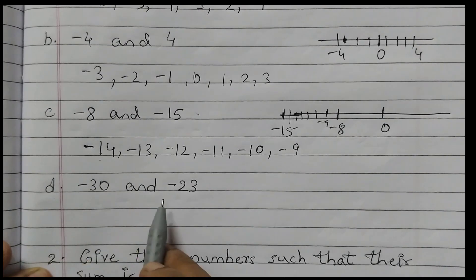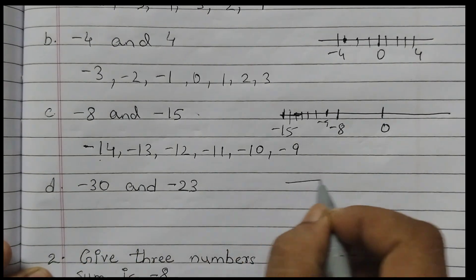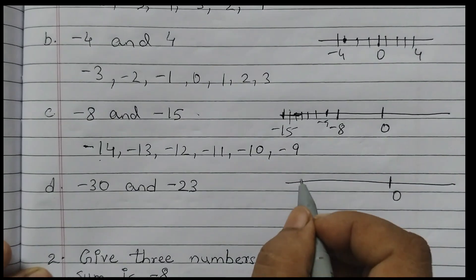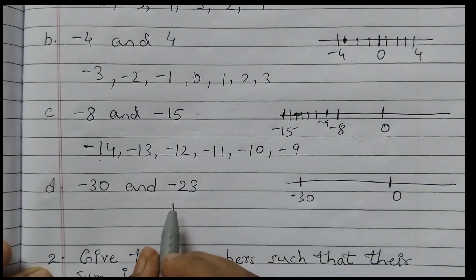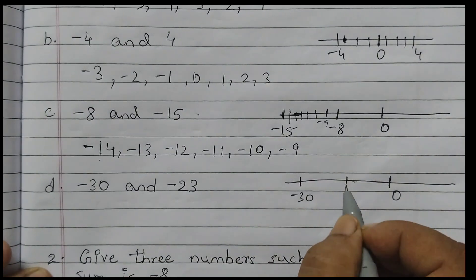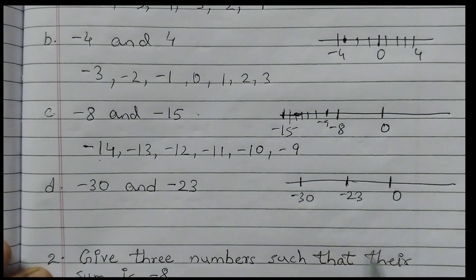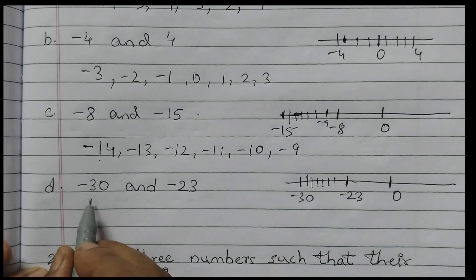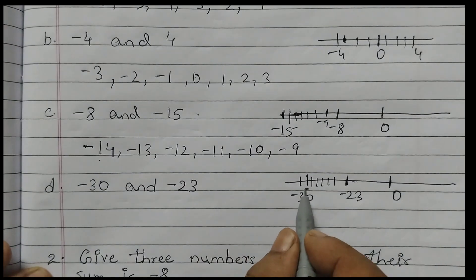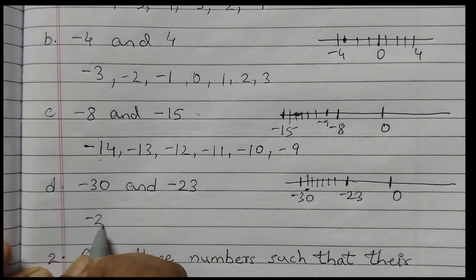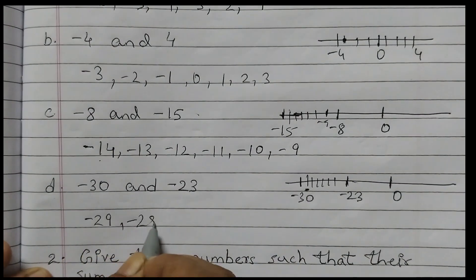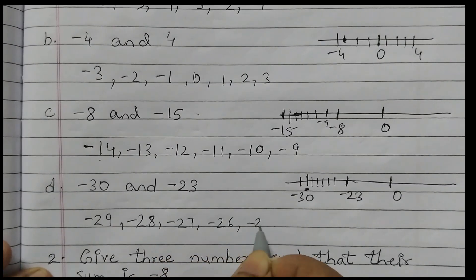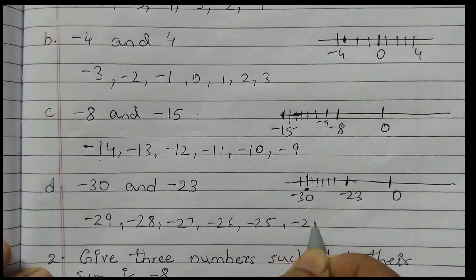Next pair: minus 30 and minus 23. Same way, I draw the number line, put 0, mark minus 30 and minus 23. The integers between these two in increasing order are: minus 29, minus 28, minus 27, minus 26, minus 25, minus 24.